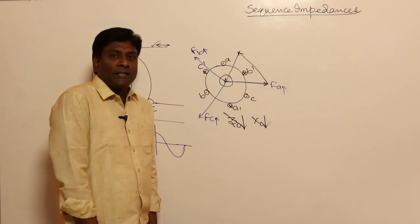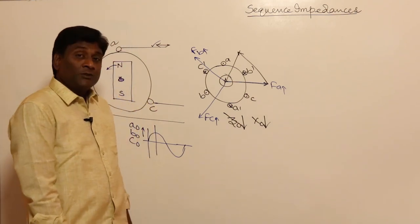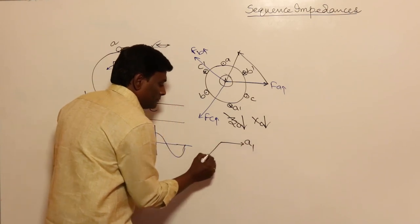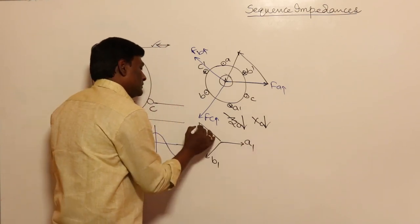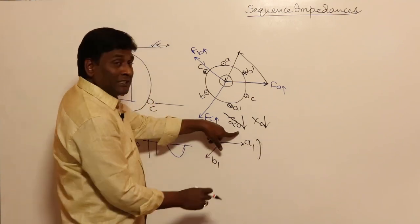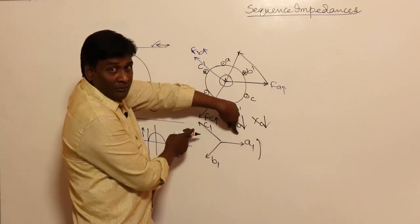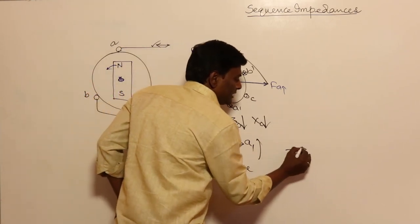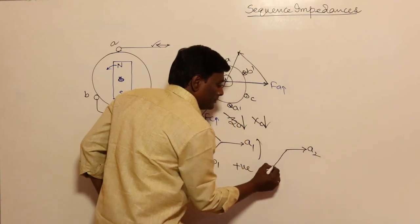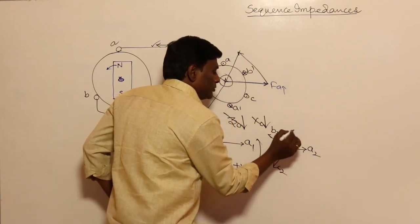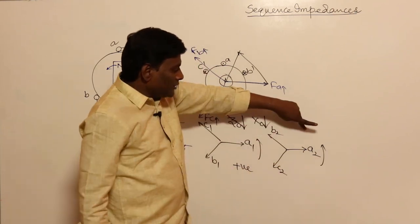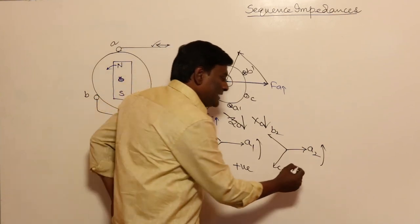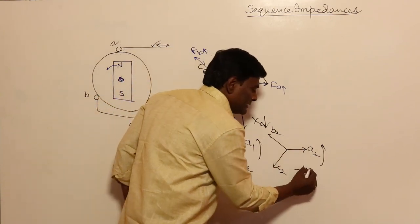Now let us think of X1 and X2 — positive sequence and negative sequence. For positive sequence, the MMF components A1, B1, C1 rotate such that if you sit at one point, first A1 comes, then B1, then C1 — that is positive sequence. For negative sequence, the arrangement is A2, C2, B2 such that first A comes, then C maximum, then B maximum — that is ACB negative phase sequence.